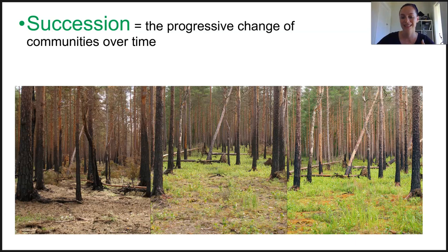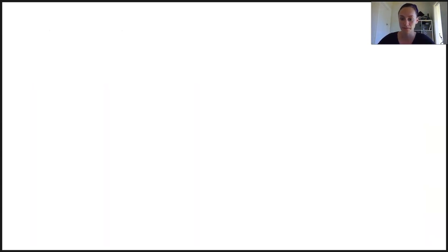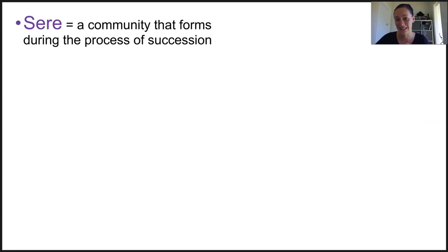In the same way that students pass through all the grades and graduate, and teachers come and go, in time an entire new and diverse community of staff and students will populate a school ecosystem — that's sort of how succession works. Communities that replace one another are known as seers.